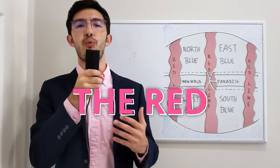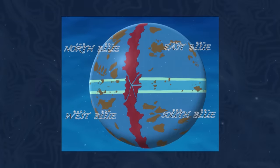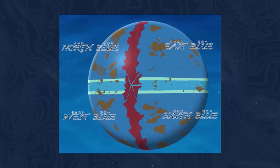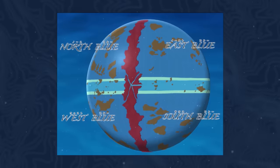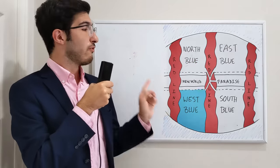Next up, we have the Red Line, which is the singular continent in the world of One Piece, and it's essentially a huge ring that serves as their sort of prime meridian in this planet, and it splits the north blue from the east blue and the west blue from the south blue.